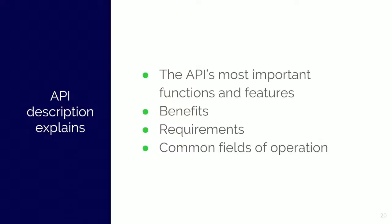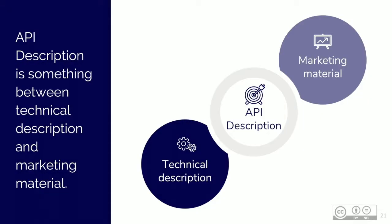API description explains the API's most important functions and features, shows the benefits of using the API, informs the audience about basic requirements and access requirements for example, gives a brief example of the most common fields of operation, and offers options to step further. For this reason, API descriptions are something between technical description and marketing material, and of course they provide some kind of context to the API.